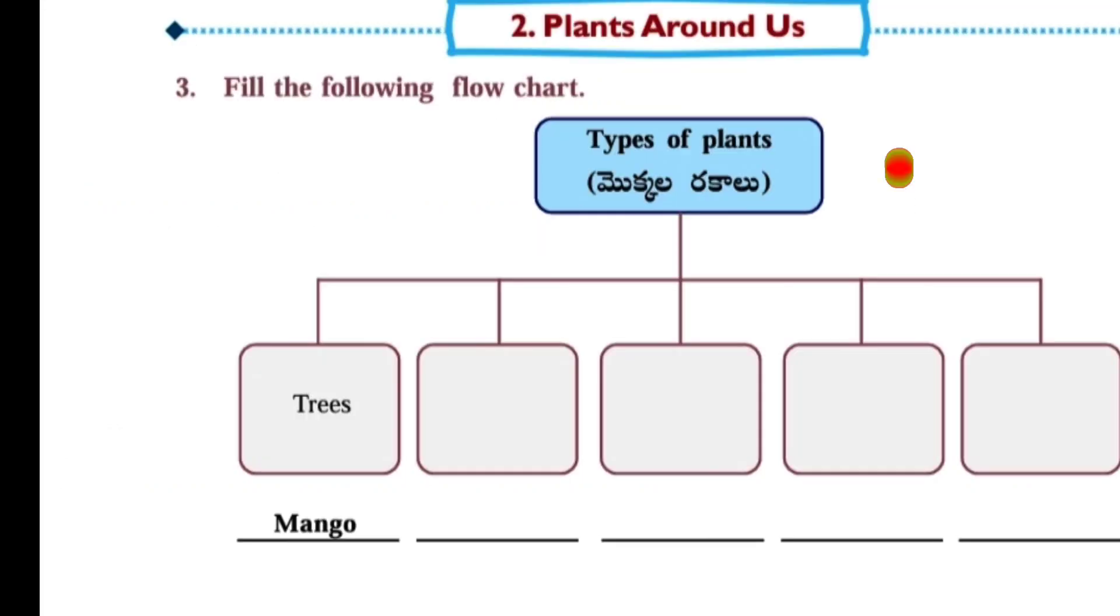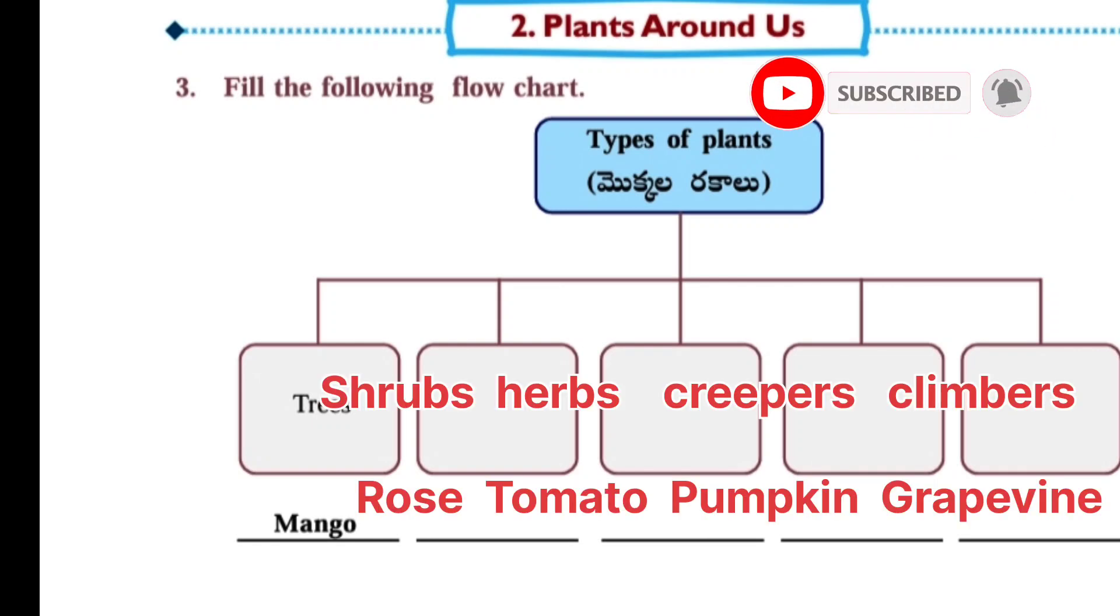Next one: Find the following flowchart types of plants. Here we have to write types of plants: shrubs, herbs, creepers, climbers. Examples: shrubs rose, trees mango, shrubs rose, herbs tomato, creepers pumpkin, climbers grape vine.